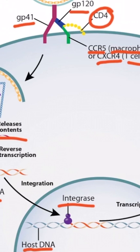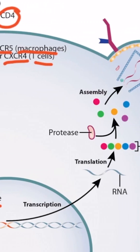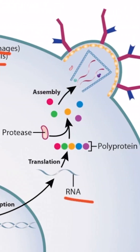Once this occurs, the host cell transcribes the DNA into RNA, which is then translated into a polyprotein. This large polyprotein is cleaved by protease, and then a new HIV virus is assembled, which goes on to infect other cells, and the process begins again.